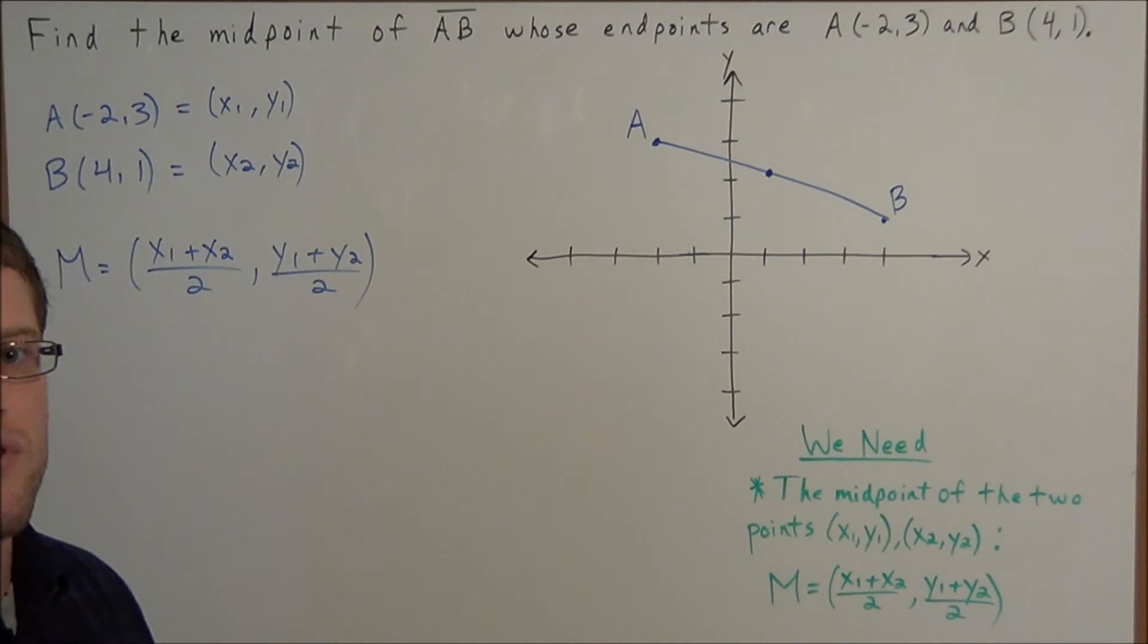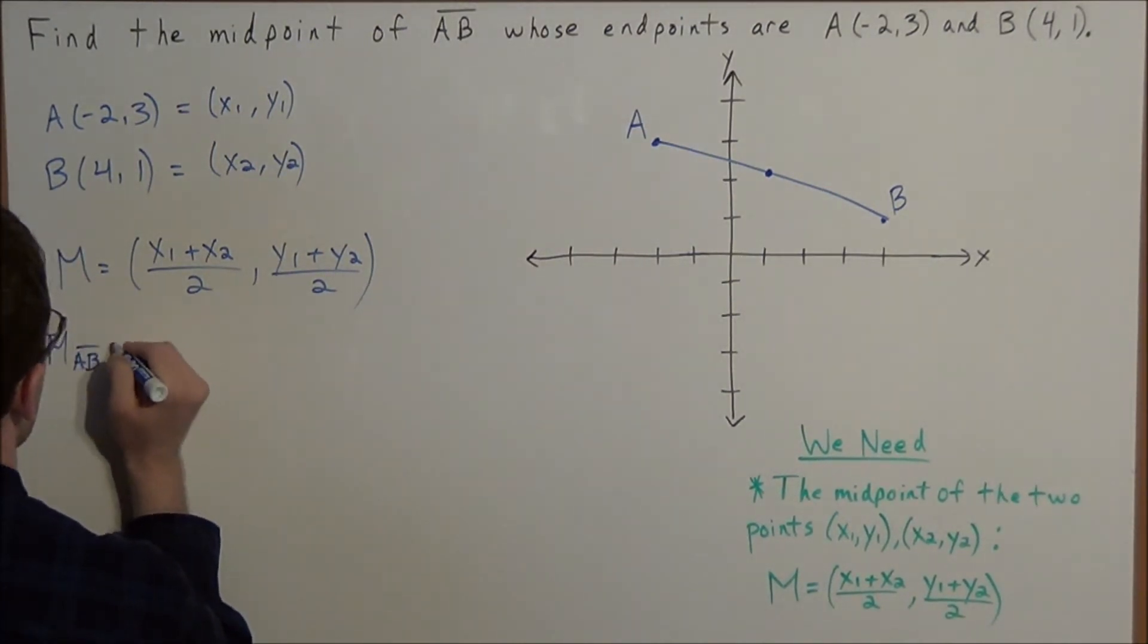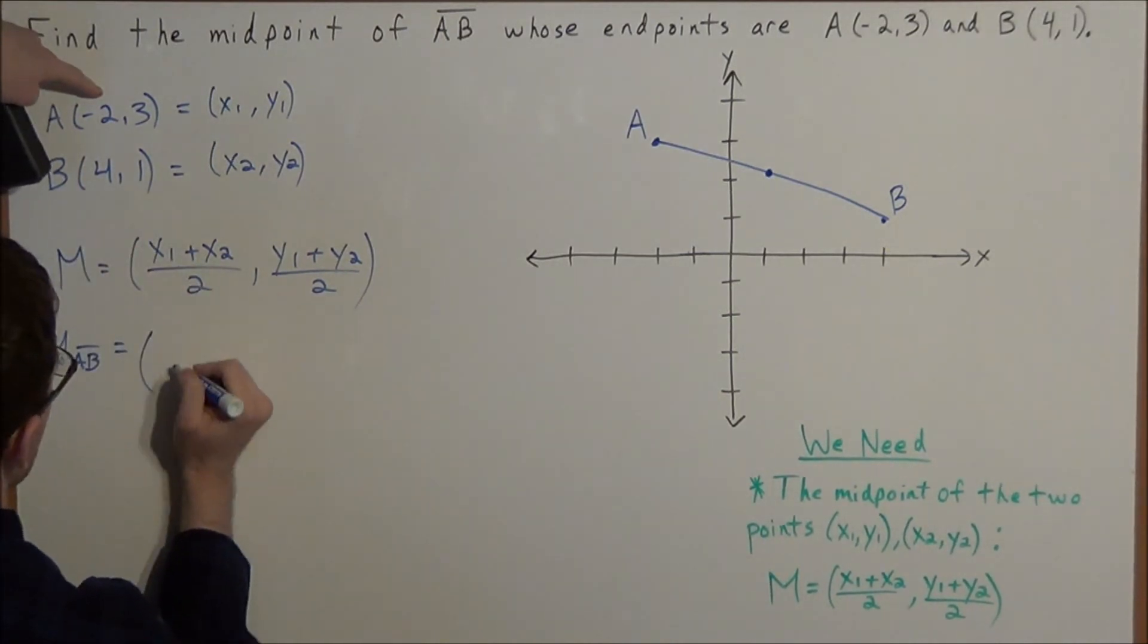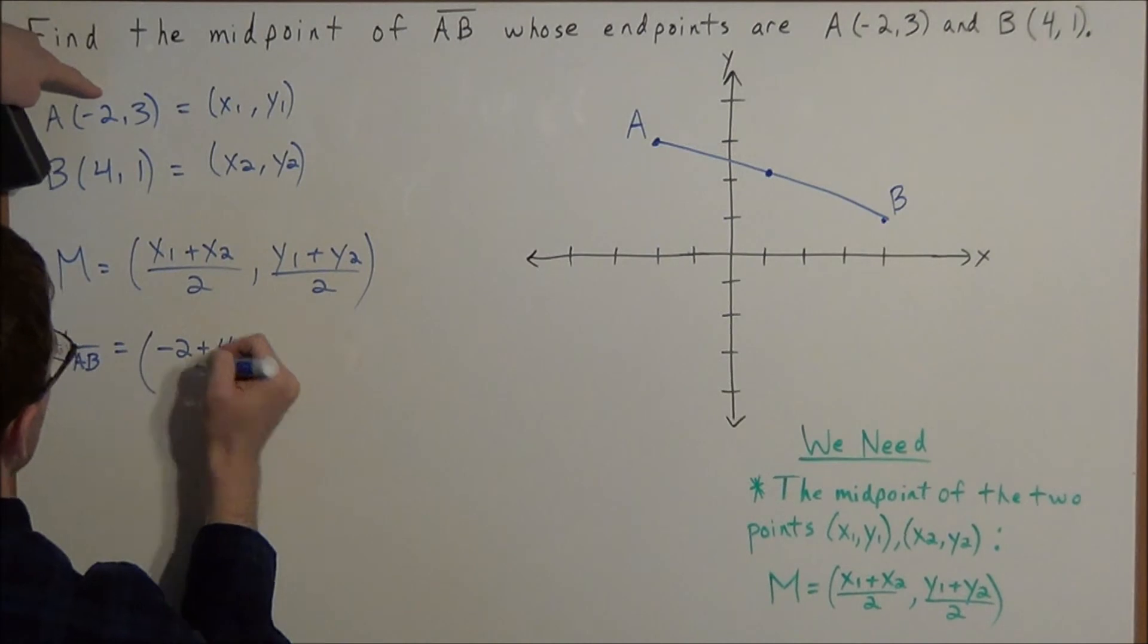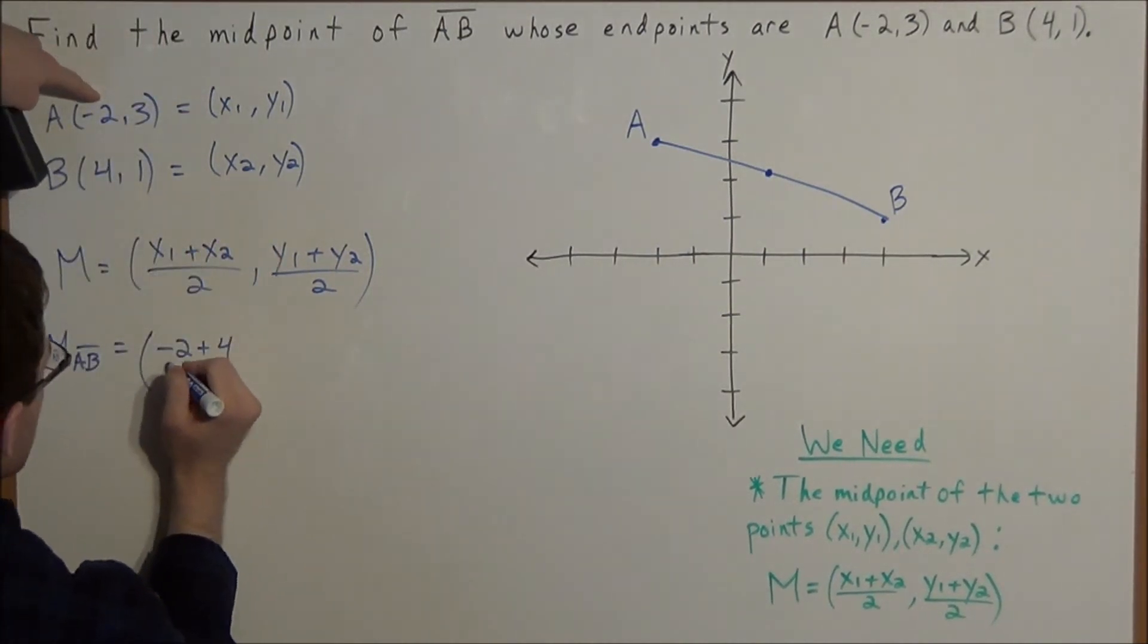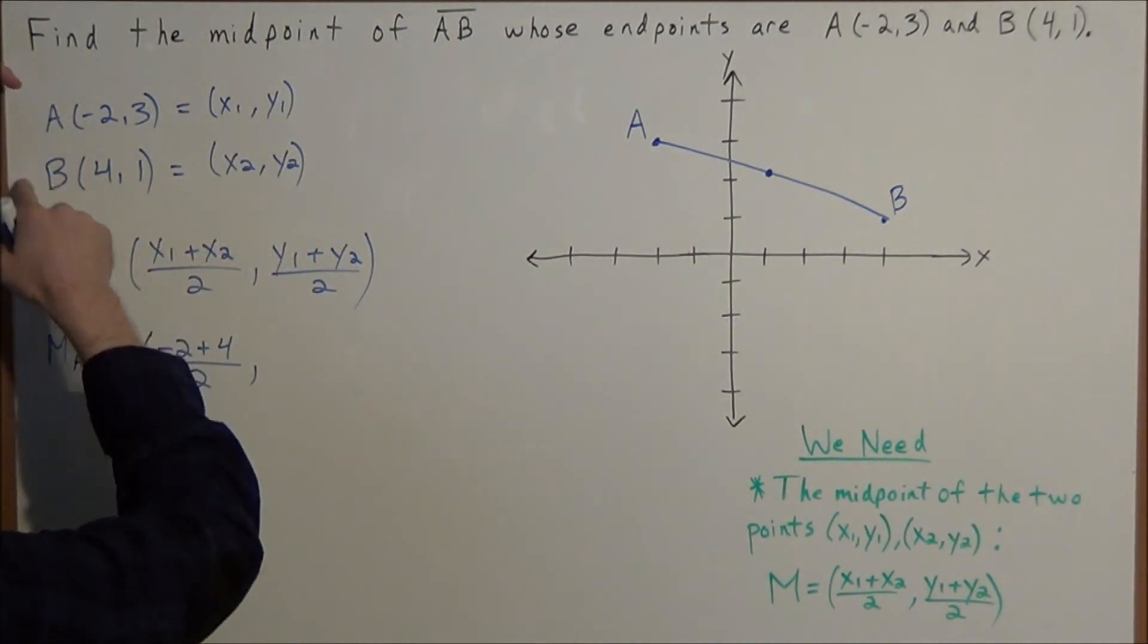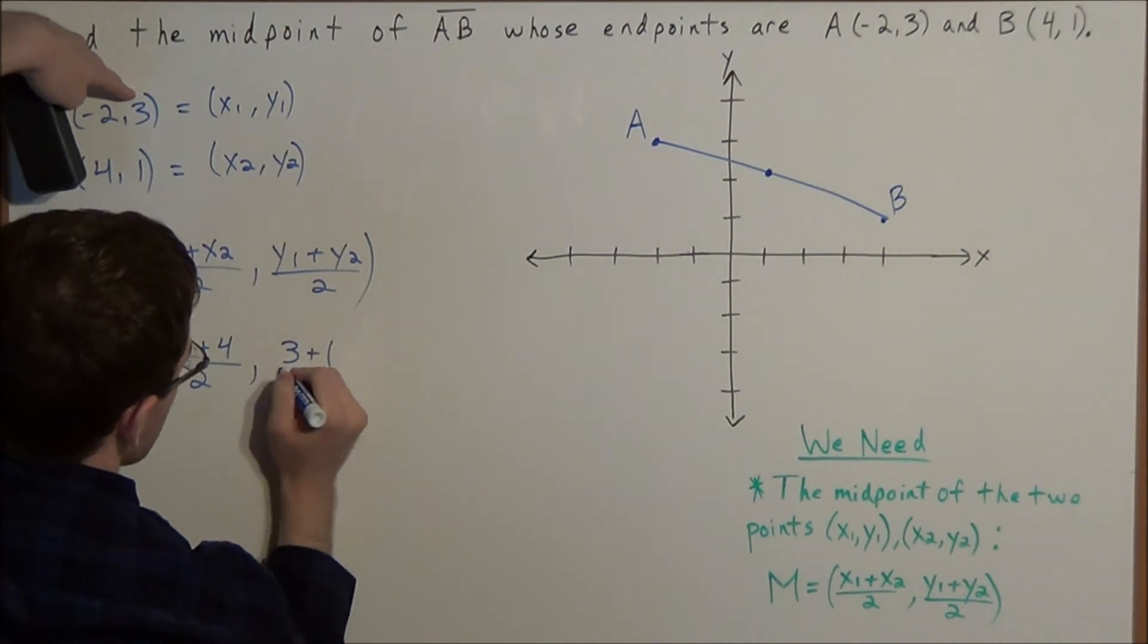So now all we need to do is substitute. So the midpoint of line segment AB is equal to x1 plus x2. Let's look at the x coordinates. We have -2 + 4, just substituting in x1, which is -2, and x2, which is positive 4, divided by 2. And now for y1, y2, we're looking at the respective y coordinates of points A and B. So we have 3 + 1 divided by 2.